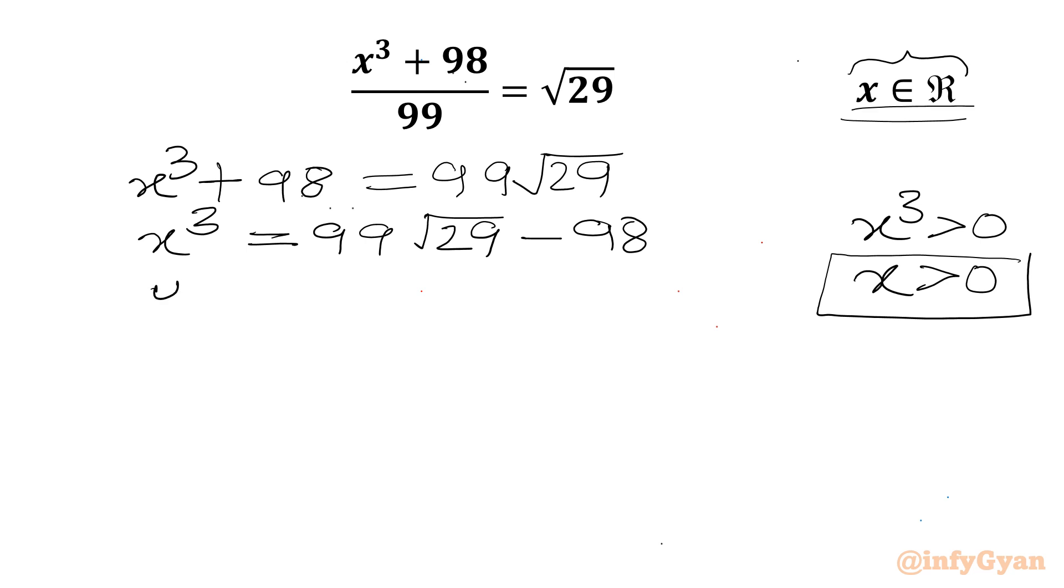Now we can assume y cubed which is conjugate of x cubed: 99 root 29 plus 98. Now we can subtract the second equation from the first one. So we will be writing x cubed minus y cubed equals minus 98 minus 98, minus 196.